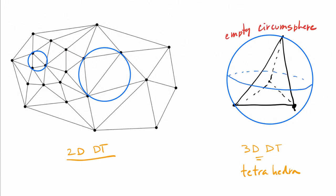That is, it must not contain any other generator in the set inside the sphere that is circumscribed to the four vertices that create the tetrahedron.